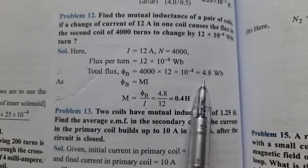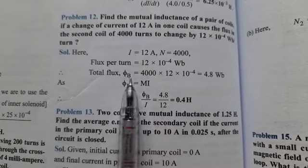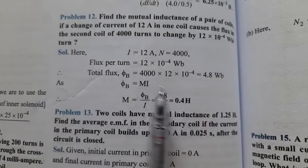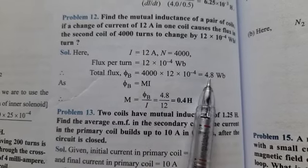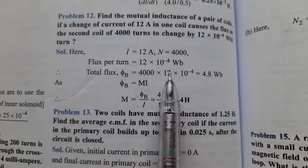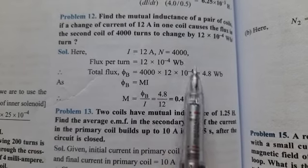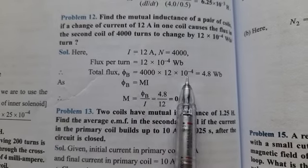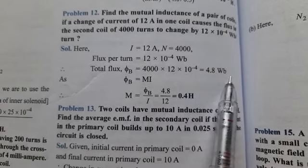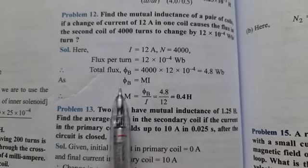Total flux equals 4000 into 12 into 10 raised to minus 4 weber. When we solve this, we get 4.8 weber. We cut off three zeros - they cancel out.